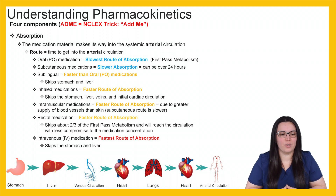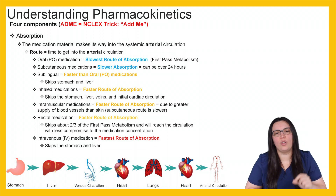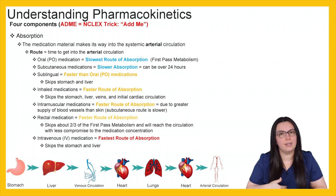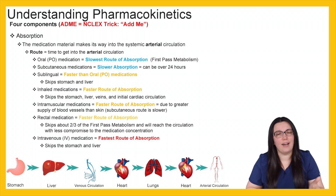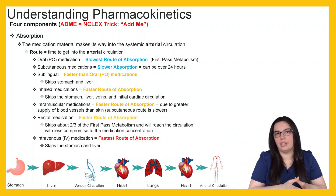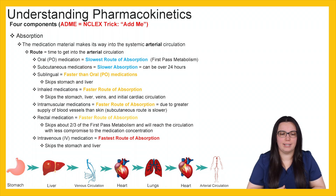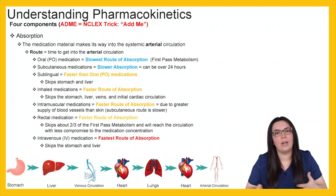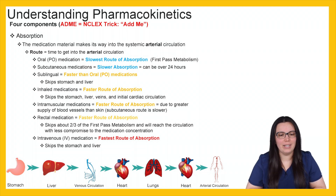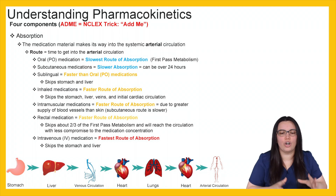Our PO oral medication is the slowest rate of absorption because it has that first pass metabolism phenomenon, which we'll discuss shortly. When we swallow a medication orally, it goes into our stomach, gets processed by our liver, and is sent through venous circulation to the heart, then to the lungs, back to the heart, and out to arterial circulation. Subcutaneous medications have slower absorption and can take approximately 24 hours to be completely absorbed. Sublingual is faster than oral PO because it skips the stomach and liver. Inhaled medications are even faster because they skip the stomach, liver, veins, and initial cardiac circulation.